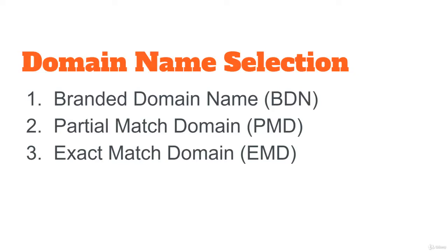In this video I'm going to give you some tips about domain name selection as far as SEO is concerned. There are three types of domain names: the first one is branded domain name, the second one is partial match domain name, and the third one is exact match domain, which is also called EMD.